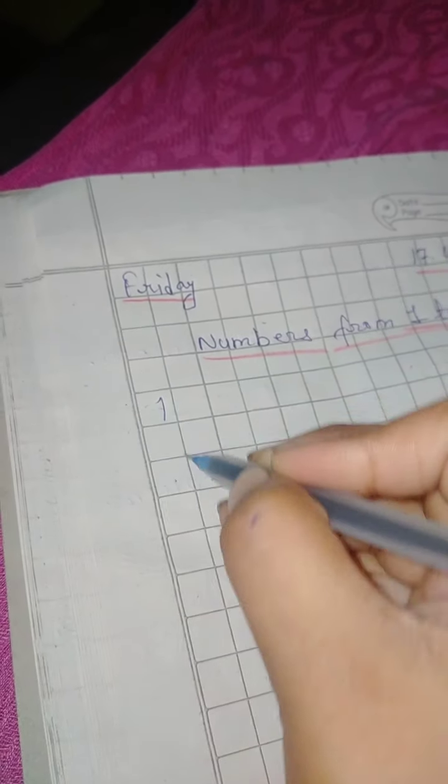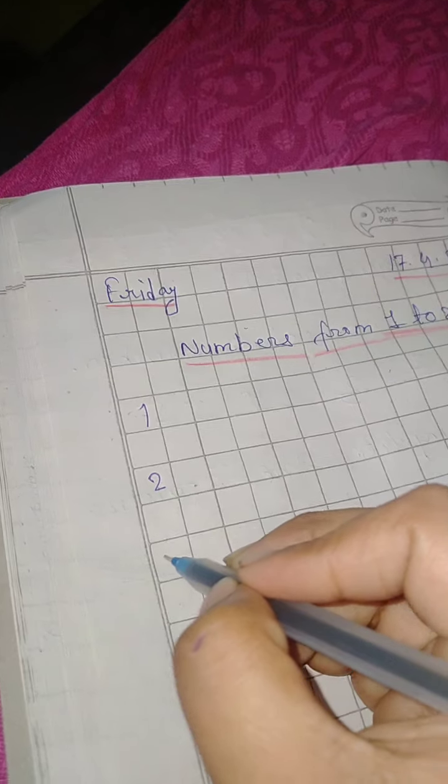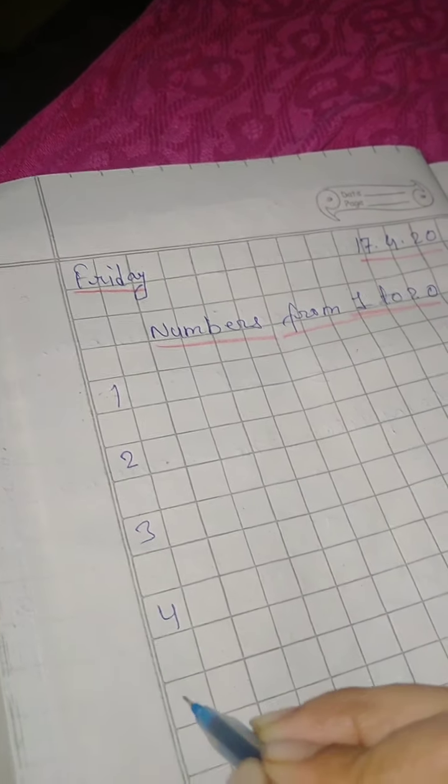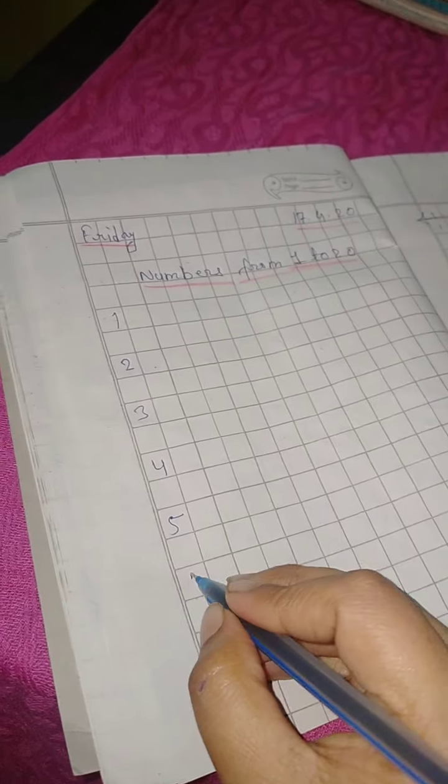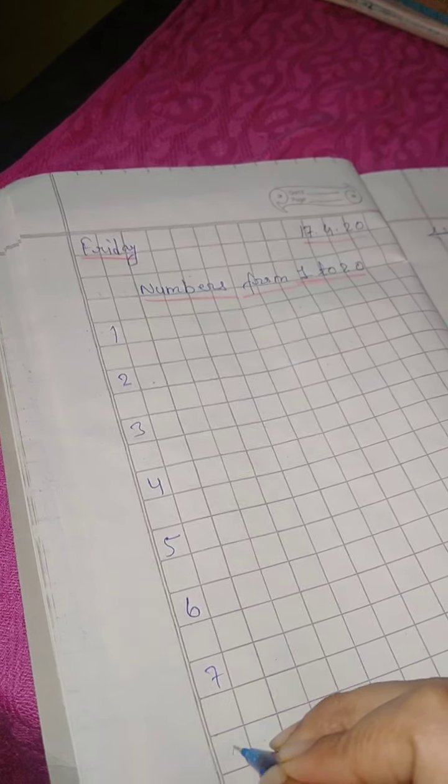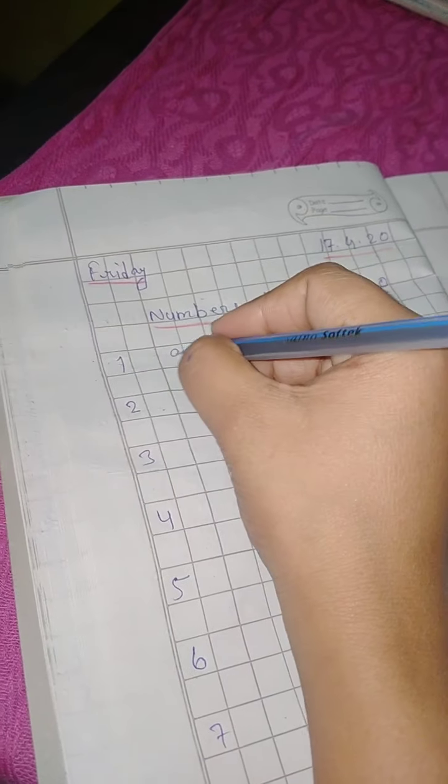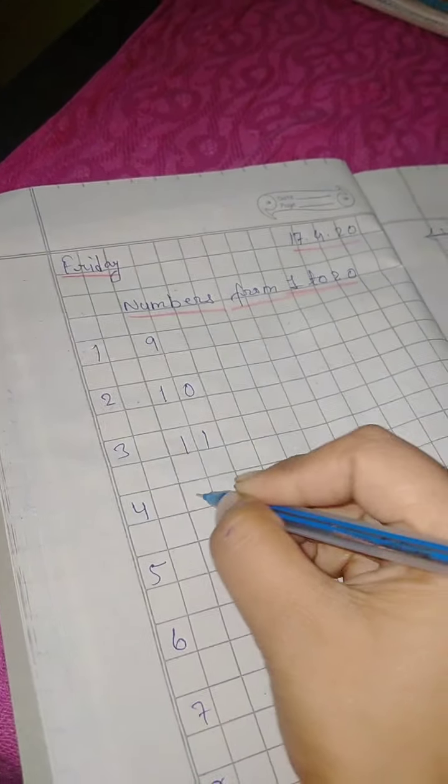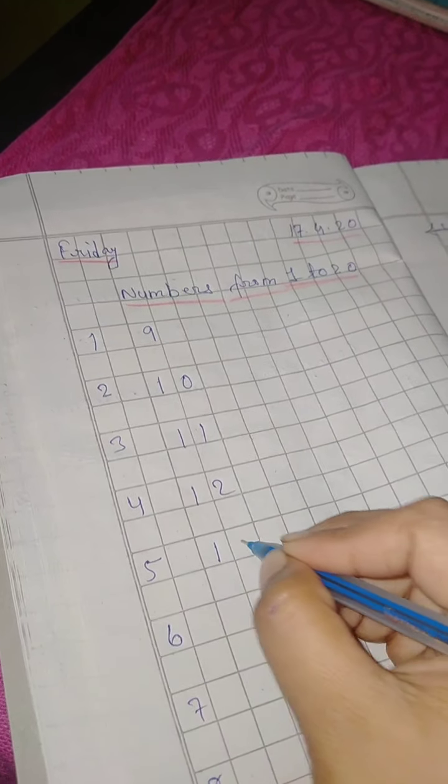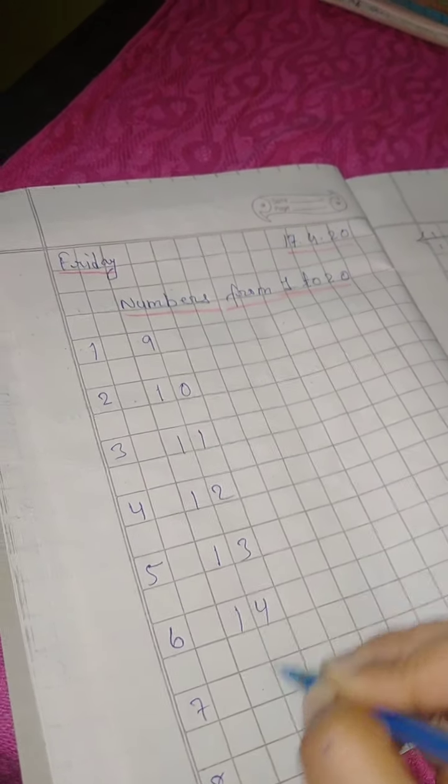So let's write the numbers: 1, 2, 3, 4, 5, 6, 7, 8, 9, 10, 11, 12, 13, 14, 15, 16, 17, 18, 19, 20.